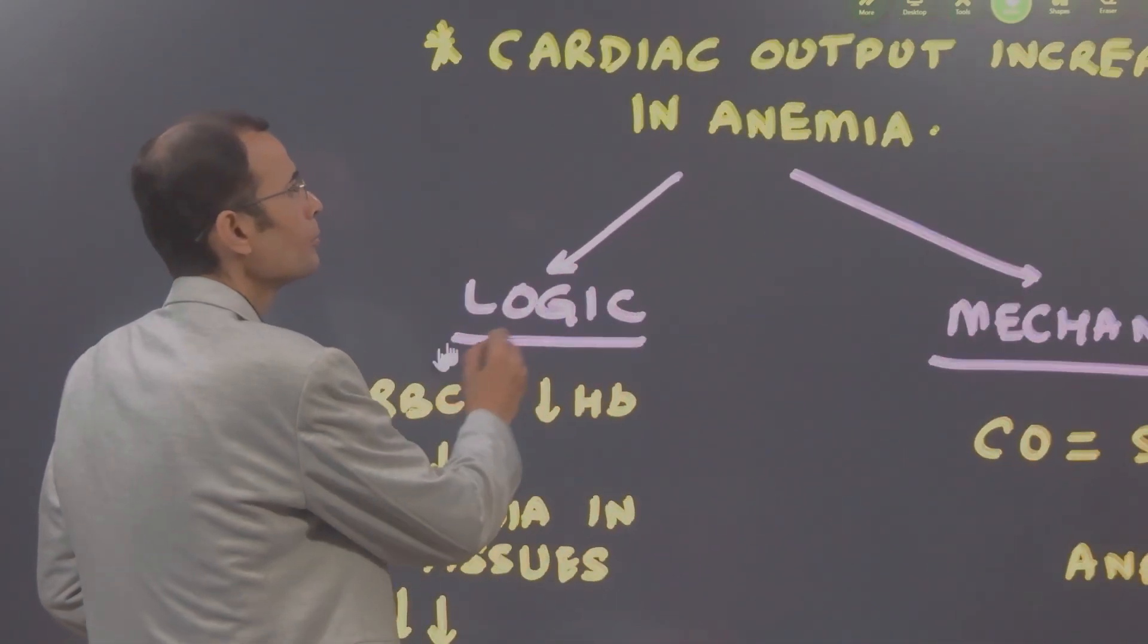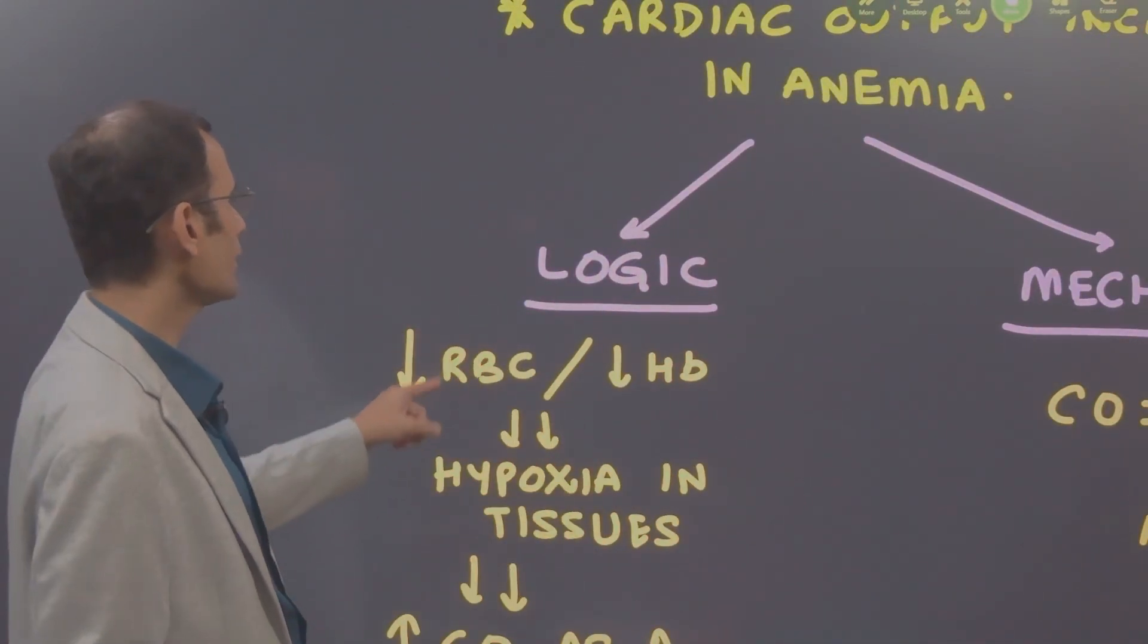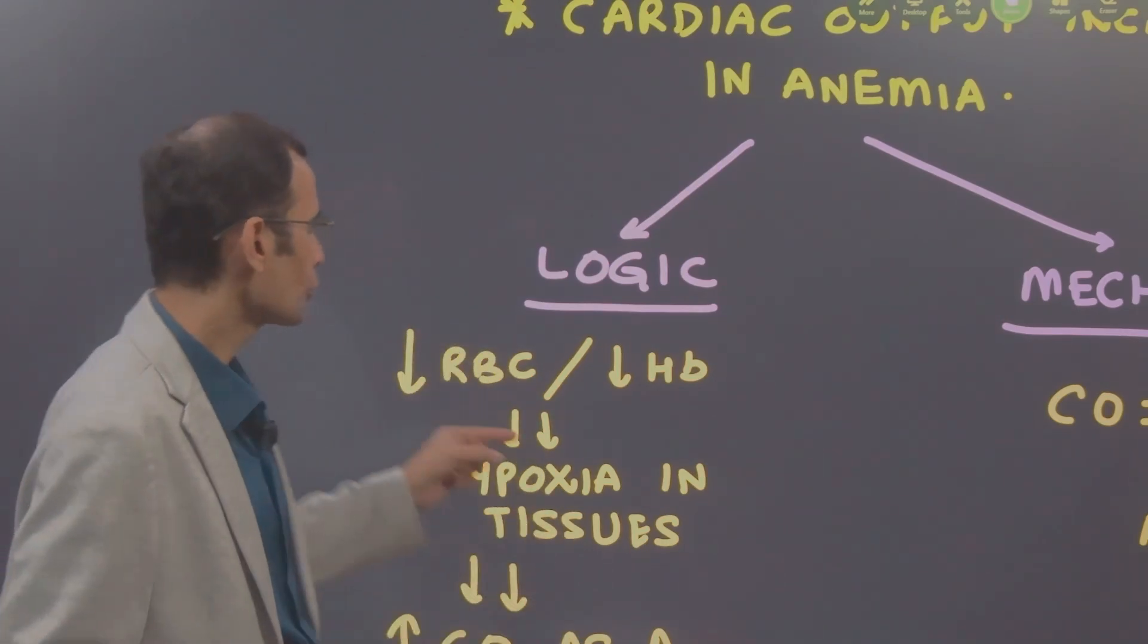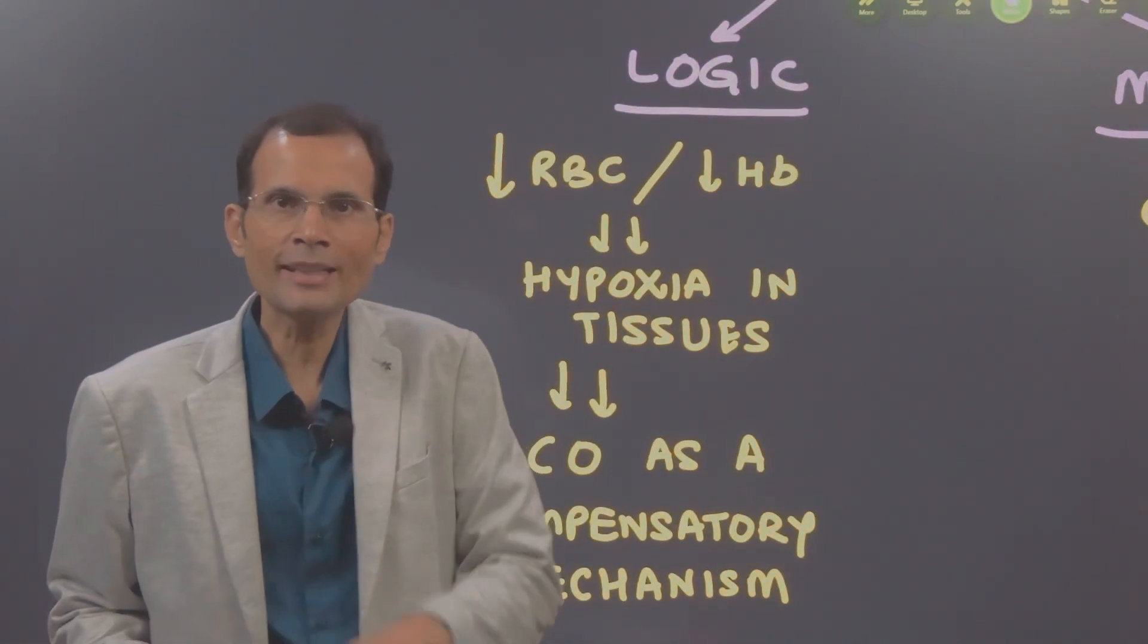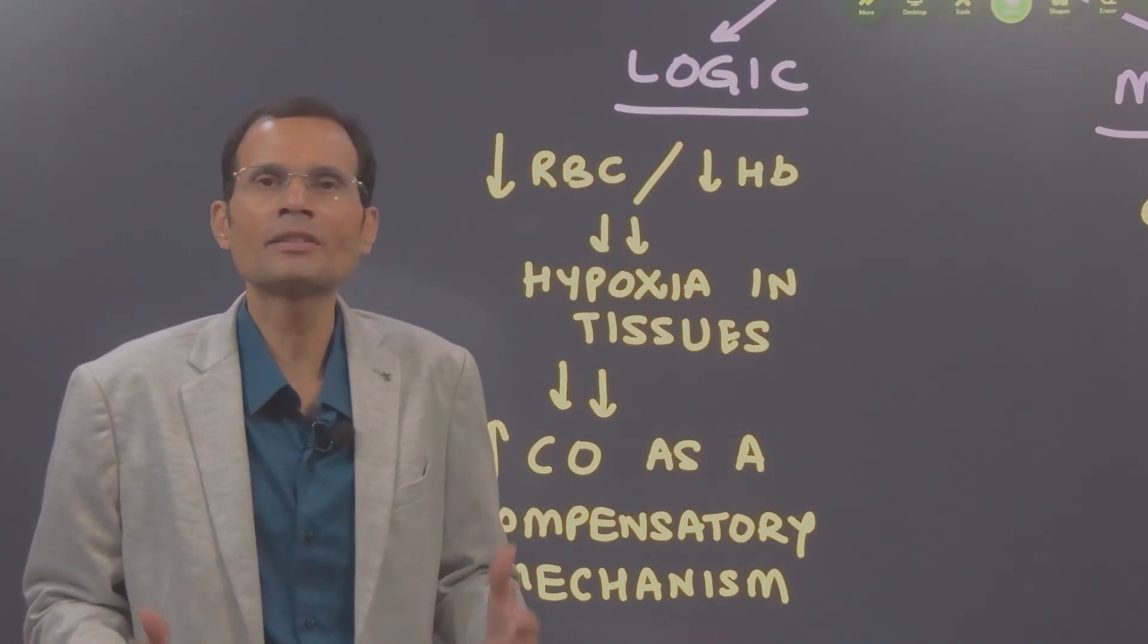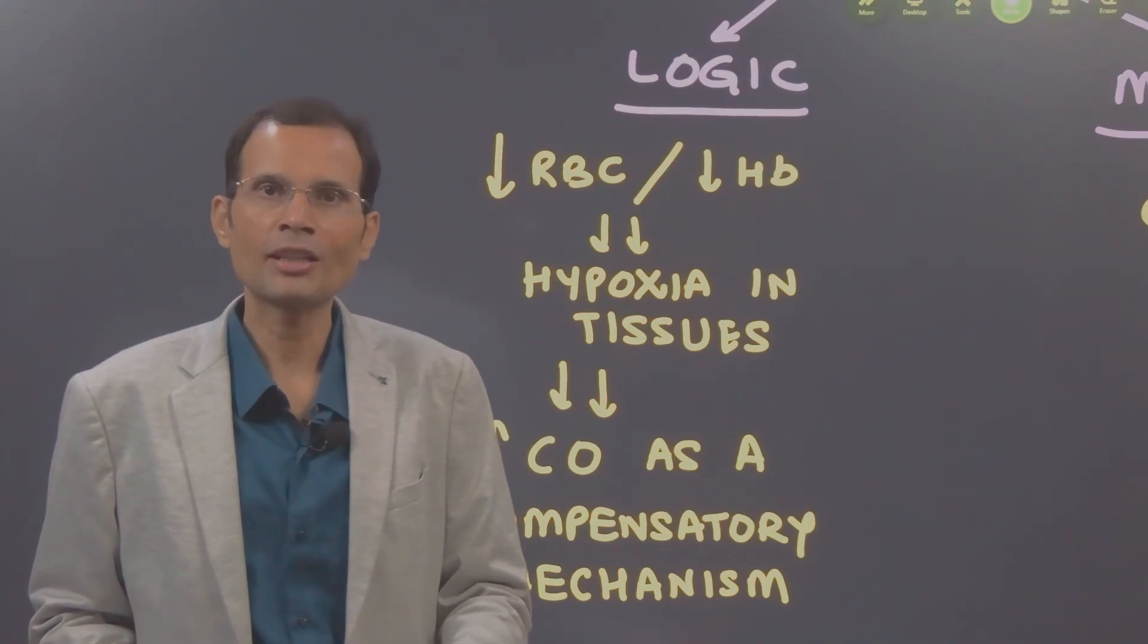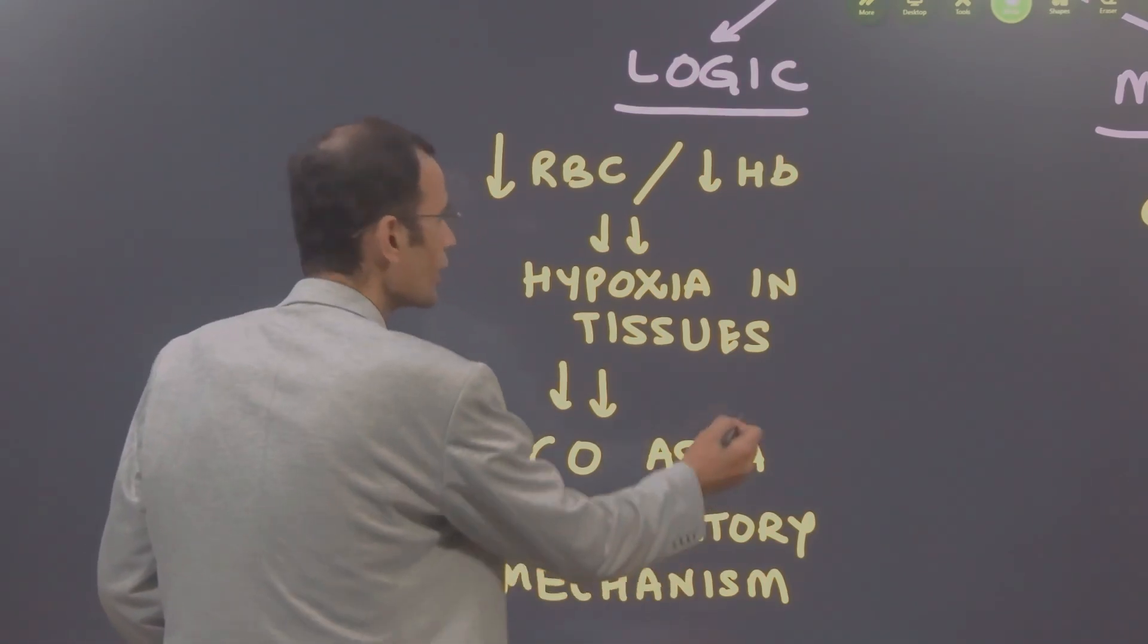Now I am sure most of you will think about the logic. Anemia means decreased RBC count and decreased hemoglobin, so there is going to be hypoxia in the tissues and therefore to compensate for that, the cardiac output will increase as a compensatory mechanism. Now that is a logic. They are not asking logic in the question, they are asking what is the mechanism. So let us figure out the mechanism.